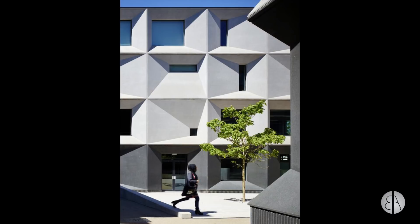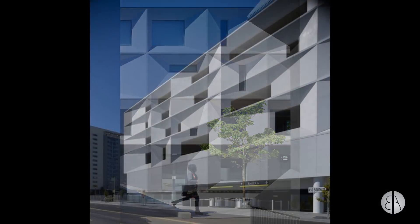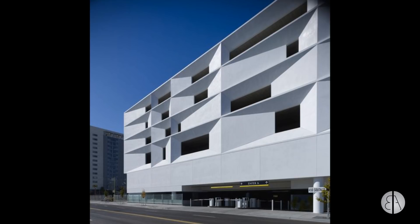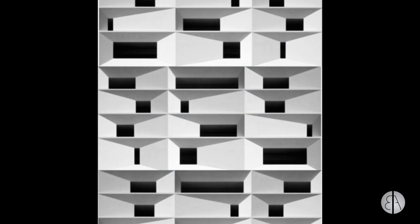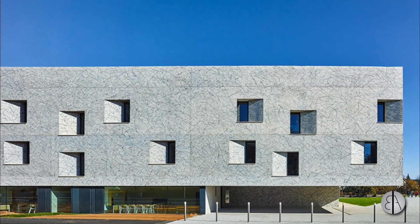Hey guys, this is the Balkan Architect and in this tutorial I'll show you how to create this popular cool-looking facade in Revit using displaced windows that create a kind of void on the facade. By creating all different types of these windows you can get all kinds of cool-looking facades.